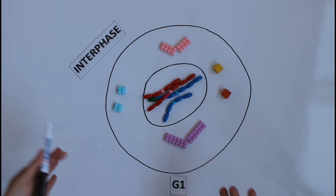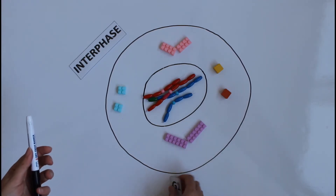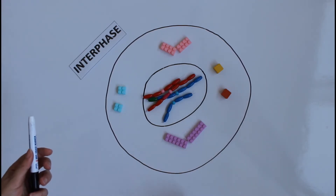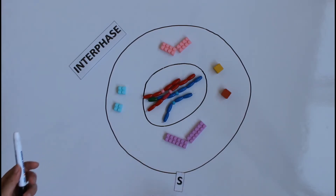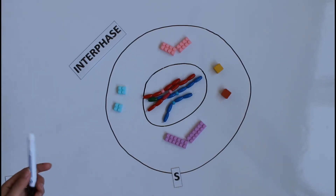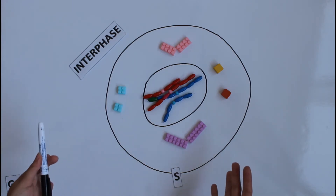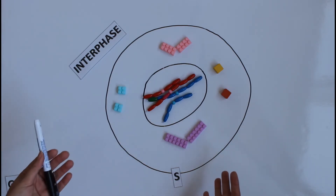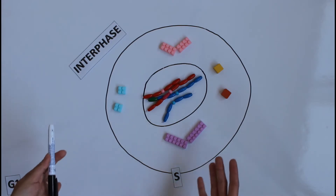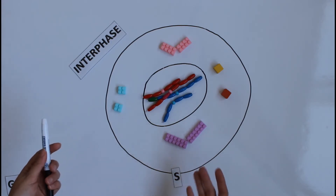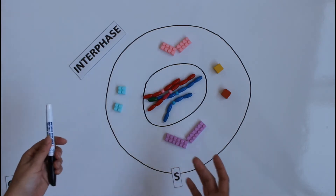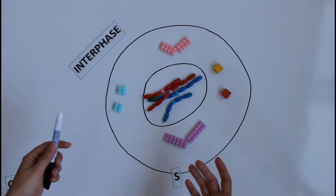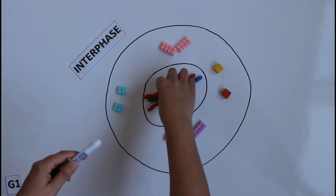After G1, the next phase is S. What does S stand for? Synthesis. Synthesis of what? DNA — synthesis means replication or duplication. So in S phase, I'm going to do the duplication of my DNA.